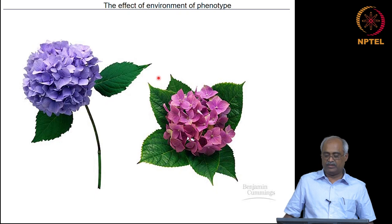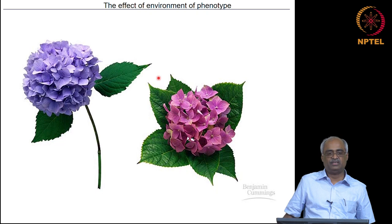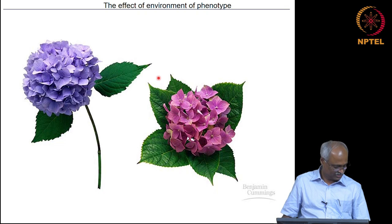Environments do influence gene expression. For example, a single gene may produce a certain pigment and the pigment color could be sensitive to pH. A plant grown in alkaline soil versus acidic soil can have different colors — this does not mean that flower color inheritance in that plant failed to follow Mendelian inheritance.